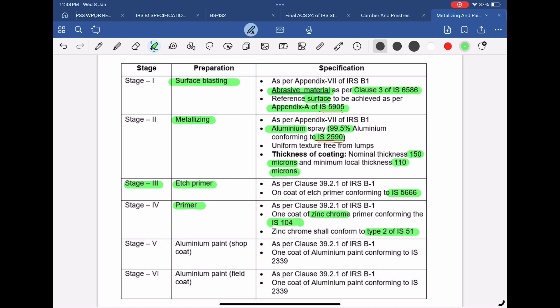After hard drying of one coat of zinc chrome primer, Stage 5, painting that is one coat of aluminum paint conforming to IS 2339 shall be applied. This coat is to be applied in fabrication workshop.